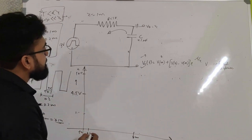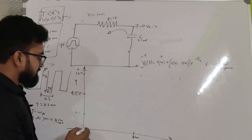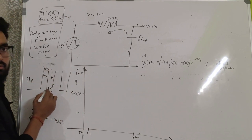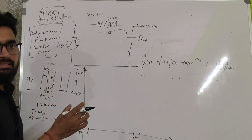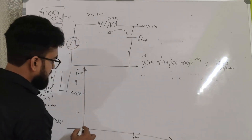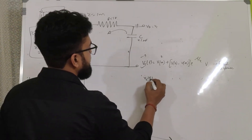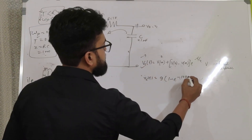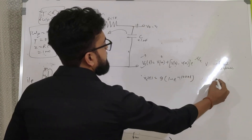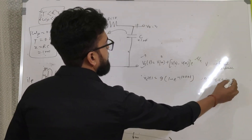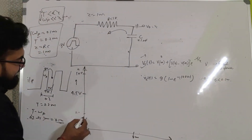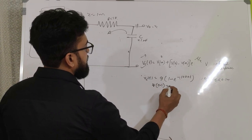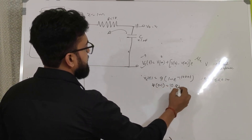At T equals 0.1 millisecond the capacitor will have charged up to a certain value, and it cannot charge further because the input switches from 9 volts to 0 volts. The charging equation valid for T greater than 0 and less than 0.1 millisecond is: Vc(T) = 9 × (1 − e^(−T/τ)), where τ = 1ms. Evaluating at T = 0.1ms gives V(0.1) ≈ 0.8565 volts.